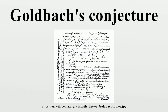On 7 June 1742, the German mathematician Christian Goldbach wrote a letter to Leonhard Euler in which he proposed the following conjecture: every integer which can be written as the sum of two primes can also be written as the sum of as many primes as one wishes, until all terms are units. He then proposed a second conjecture in the margin of his letter: every integer greater than two can be written as the sum of three primes. He considered one to be a prime number, a convention subsequently abandoned.